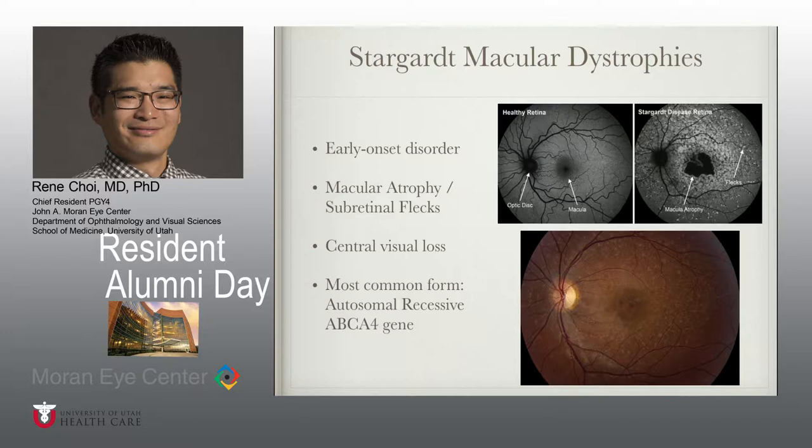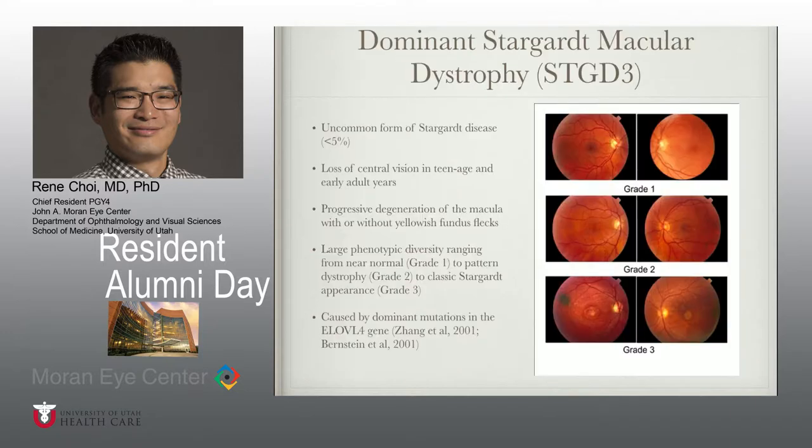Autosomal recessive Stargardt macular dystrophy is the most common form, due to mutations in the ABCA4 gene whose protein product is involved in the transport of retinoids from the rod outer segments. There is another type known as autosomal dominant Stargardt macular dystrophy.